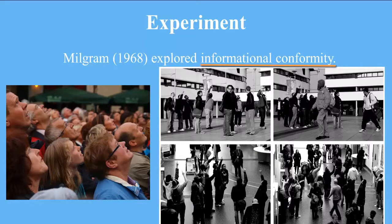Milgram placed confederates on a street corner and instructed them to gaze intently at the open sky. As the number of confederates increased across trials, so too did the number of passing pedestrians who stopped and stared upwards at the sky.